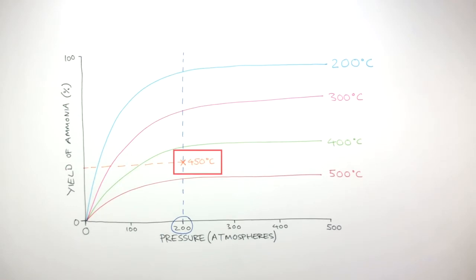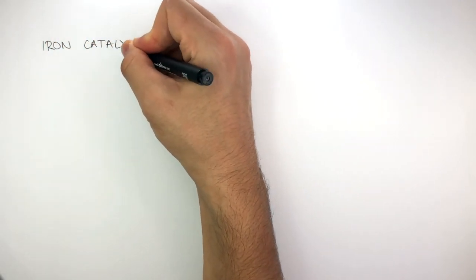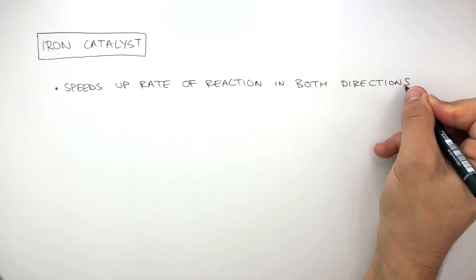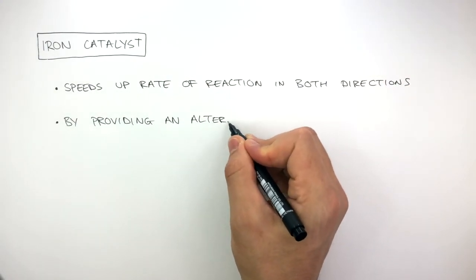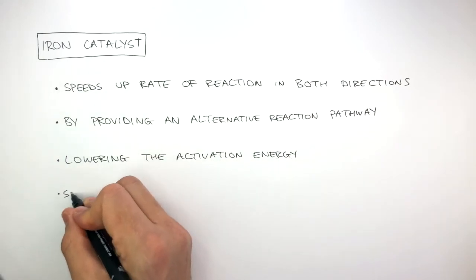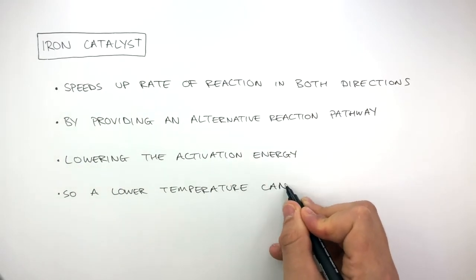Therefore, a compromise of 450 degrees Celsius is used to make sure the rate of reaction is high enough, but also so that the yield is not too low. Finally, an iron catalyst is used which speeds up the rate of reaction in both directions by providing an alternative reaction pathway, lowering the activation energy so a lower temperature can be used.